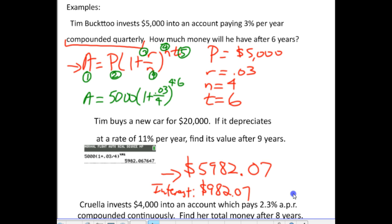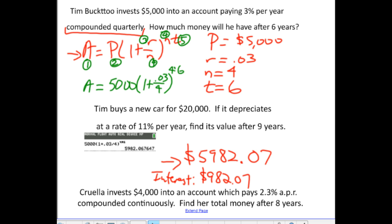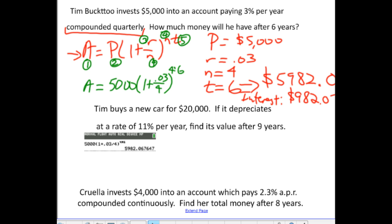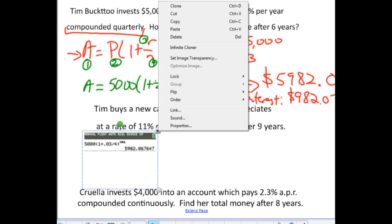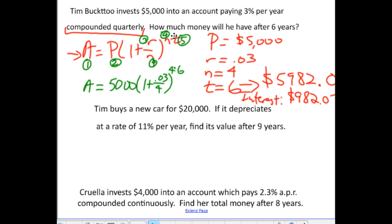Let's do it again. Let's do another problem now. Take a look at the next problem. The next problem says that Tim buys a new car. He pays $20,000 for it. Now, it depreciates. In other words, it loses value each year that he owns it. It depreciates at a rate of 11% per year. Find its value after nine years. Well, again, this is a depreciation problem that uses that periodic formula. So, I've got A equals P, parenthesis, one plus r over n to the nt power.